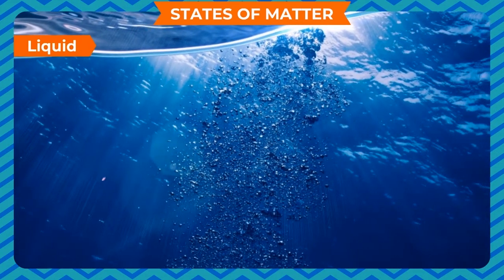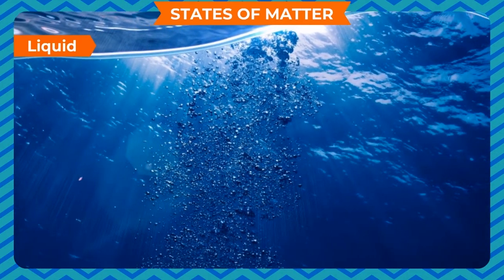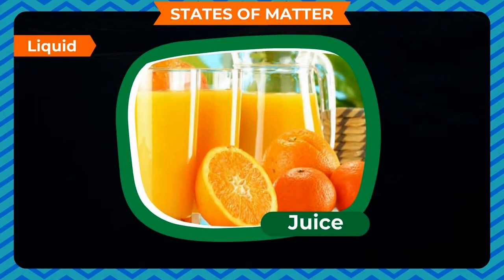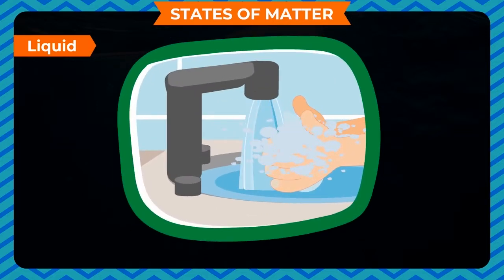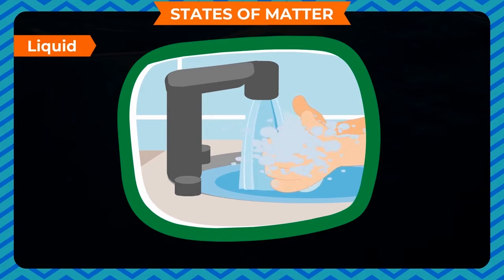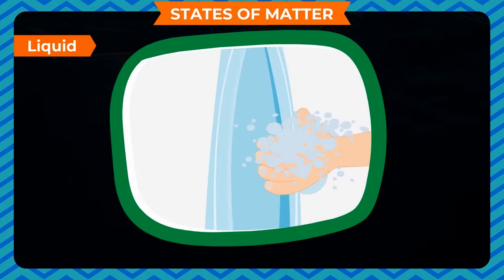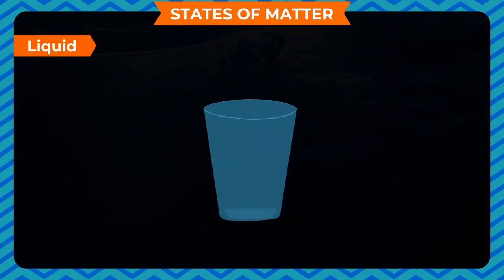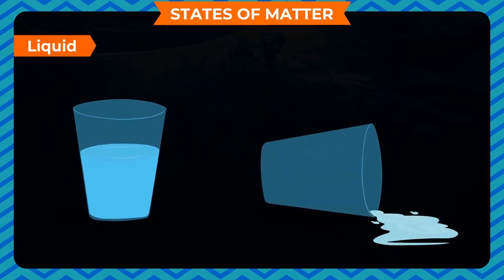Another state of matter is liquid. We drink water, milk and juice — all of these are liquids. We cannot hold them in our hand like solids. They do not have a fixed shape. They take the shape of the container in which they are kept. If we pour some water into a glass, it will take the shape of the glass. Liquids have the ability to flow.